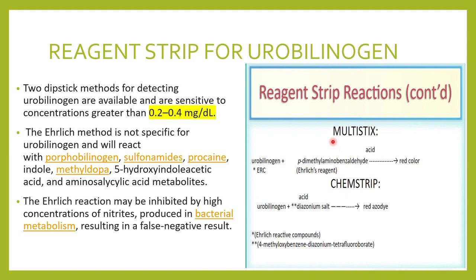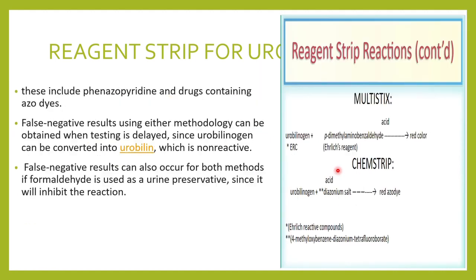The Ehrlich reagent used in the Multistix may not be specific only for urobilinogen — it can also react with porphobilinogen, sulfonamides, bromine, methyldopa, and aminosalicylic acid, giving false positive results. The reaction can also be inhibited by high concentrations of nitrates, giving a false negative result. Both reagent strip methods carry a chance of false positive and false negative results.